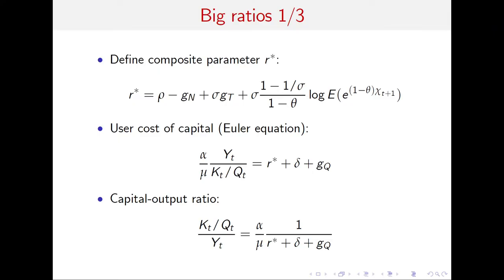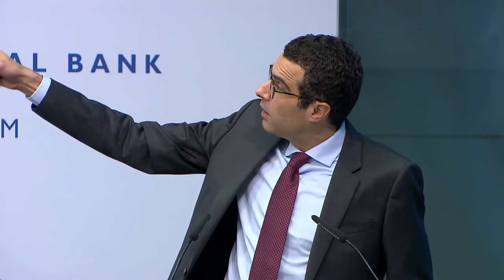The capital-output ratio is alpha divided by (mu times the user cost), which is very intuitive: higher technological capital share alpha means more capital, higher markups mean less capital — because if market power restricts output, you don't need as much capital. Similarly, if capital is very risky leading to high R-star, that deters investment. We can also compute the spread between the marginal product of capital — the profit rate divided by the value of capital — and the risk-free rate.